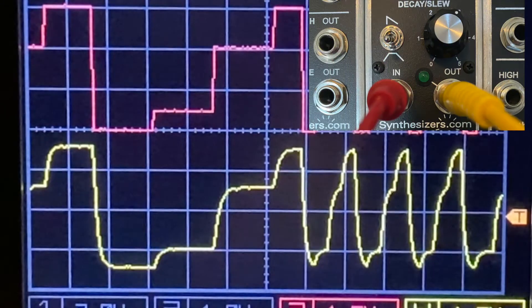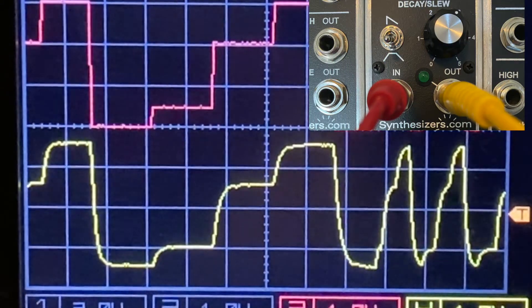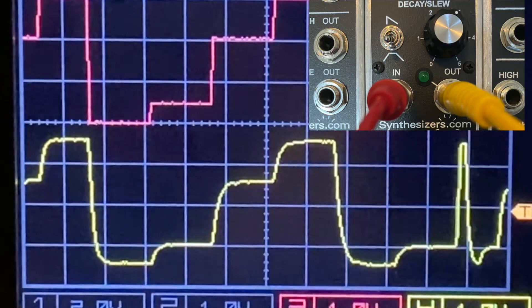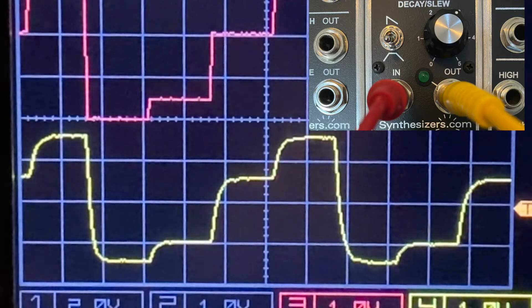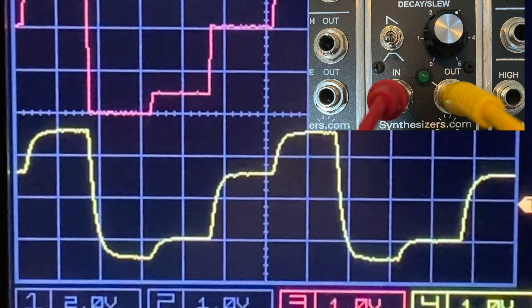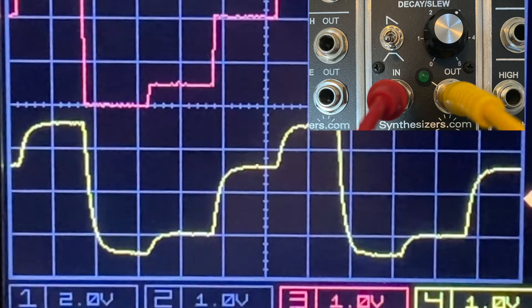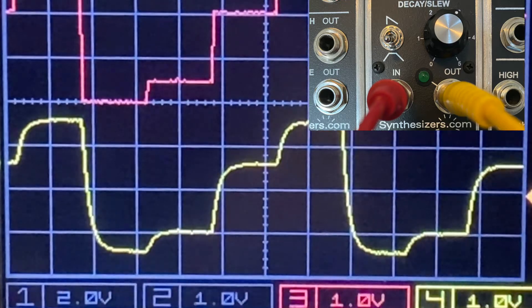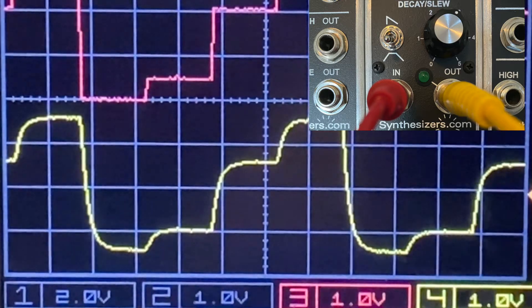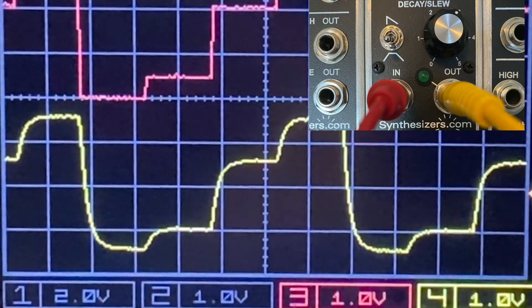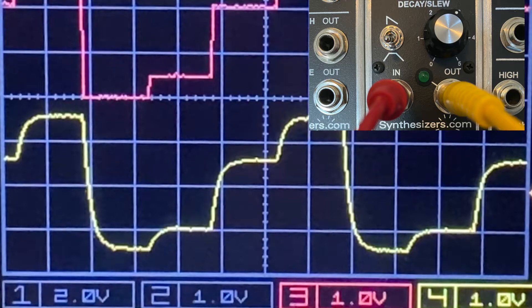On this particular slew limiter from synthesizers.com, there is one knob that controls the attack and decay time and sets them to be the same value. It is important to note that the curves on this slew limiter are concave down or logarithmic as the pitch rises and concave up or exponential as the pitch decreases. This is a very common trait with portamento on electronic instruments.